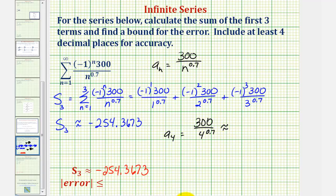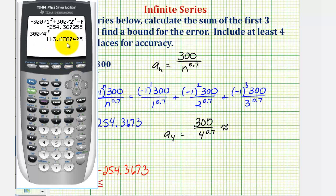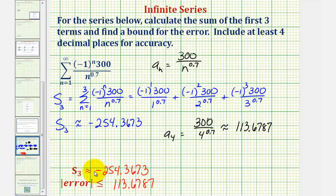Now we'll go back to the calculator. 300 divided by four raised to the power of 0.7 is approximately 113.6787, which means if we use this partial sum as an estimate for the infinite sum, the error will always be less than or equal to this approximate value.